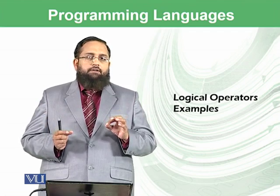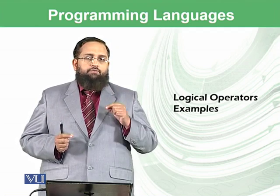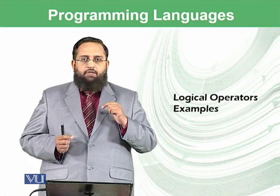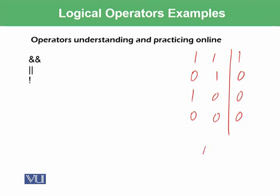We studied these operators in computer architecture: AND, OR, and NOT. For the AND operator, for inputs 1,1 it produces output 1; for 0,1 it is 0; for 1,0 it is 0; and for 0,0 it is 0. So the AND operator only works when both conditions are true. In C++ we write this statement using the AND AND symbol.